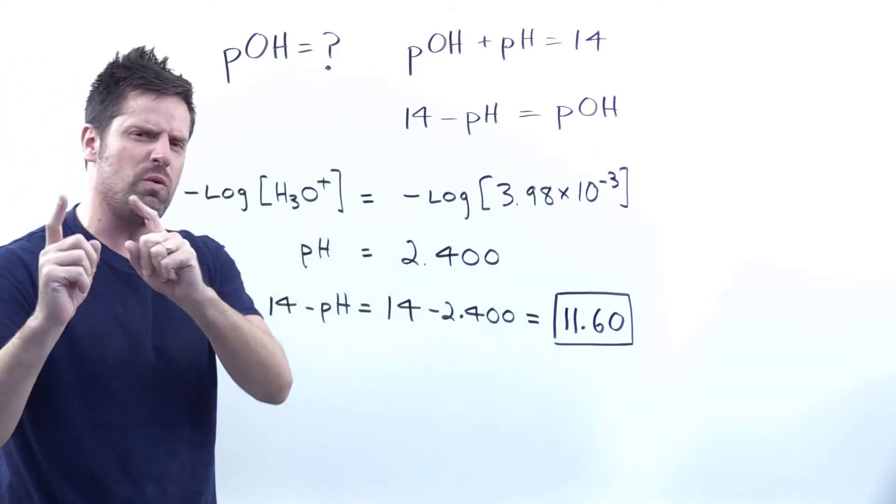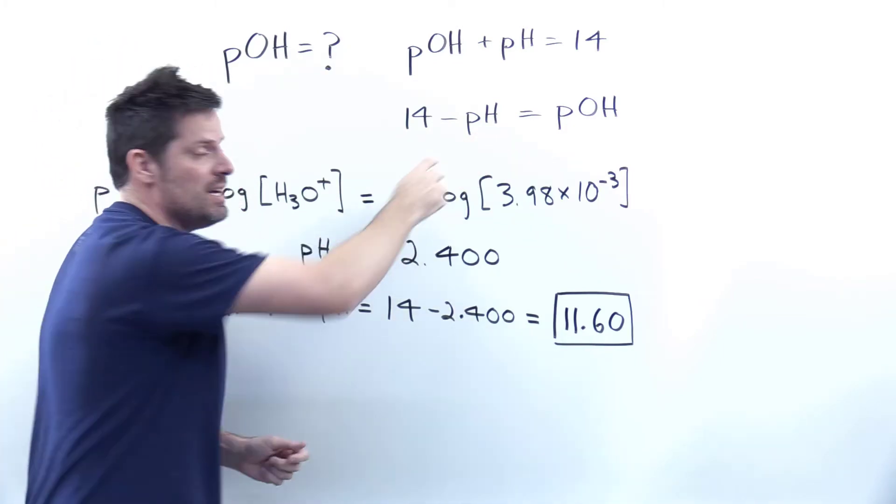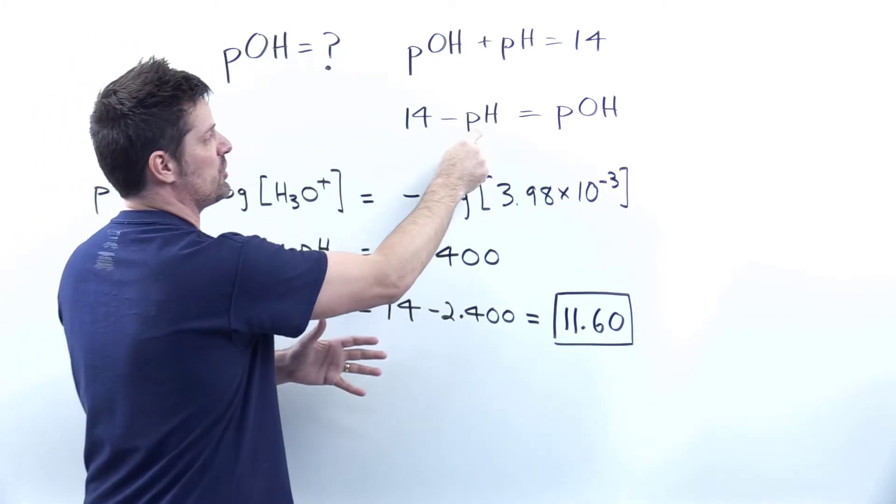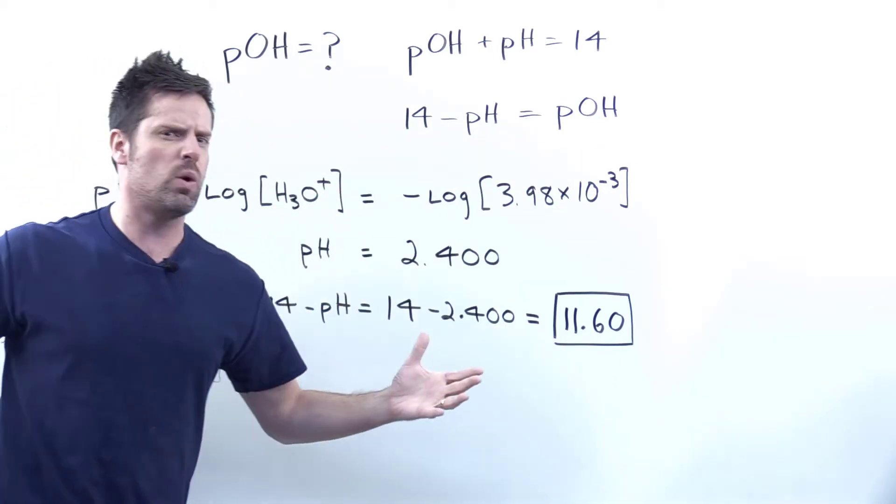With this in our minds, you can see that if we can take the information given and use it to identify pH, then we can take pH and insert it into this equation, 14 minus that equals pOH. You see where we're going? So what have we been given?